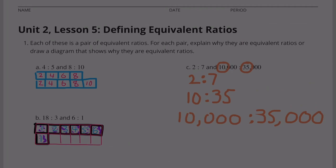You're done with Unit 2 Lesson 5, Defining Equivalent Ratios.